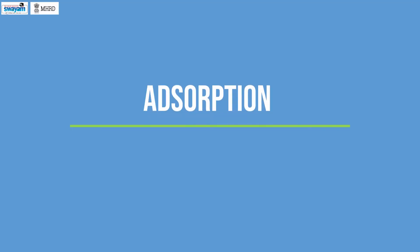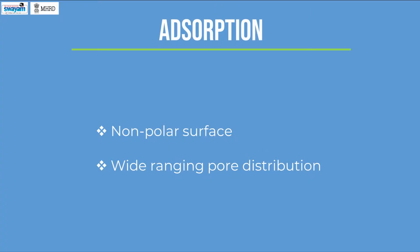Adsorption. The adsorption method uses large surface area adsorbents for the purification of ethanol. Selection of a suitable adsorbent depends on the physical and chemical properties of ethanol as well as impurities. Since ethanol is a polar compound and impurities are of various particle sizes, an adsorbent with a non-polar surface and wide-ranging pore distribution is employed for ethanol purification.